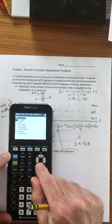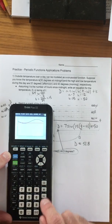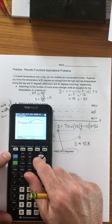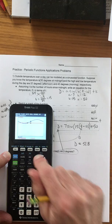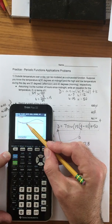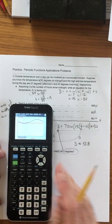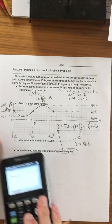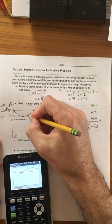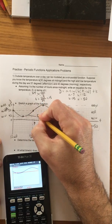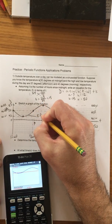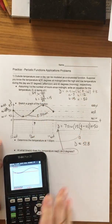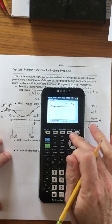So you can go second calculate, intersect, first curve, second curve, and guess at that point. And it's eight hours, eight and a half hours after midnight. So that would be that point about 8:30 a.m.